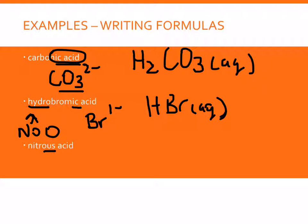Nitrous acid is going to be formed from the -ite ion because the -ous acid comes from the -ite ion. So the nitrite ion is NO2 one minus. So again, we need one hydrogen and then the nitrite ion and that would be our formula.